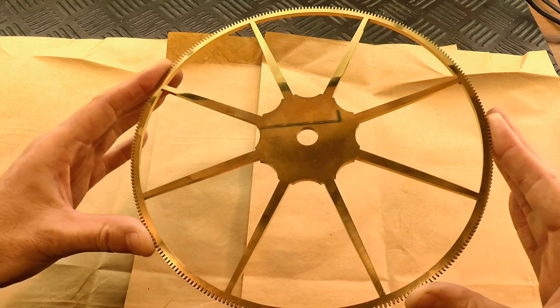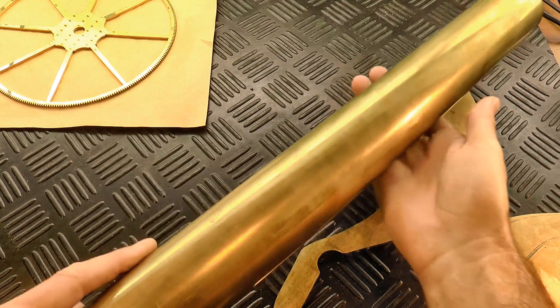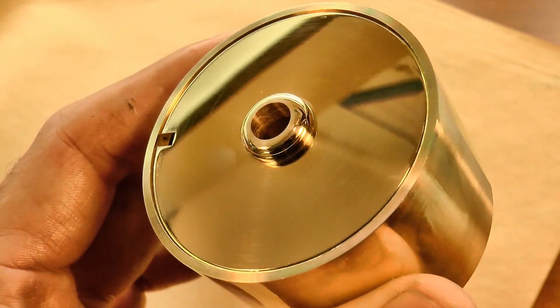G'day, Chris here, and welcome back to Clickspring. With the main wheel complete, it's time to make the barrel assembly. So in this episode, I'll use the length of this tubing and these offcuts to make this.